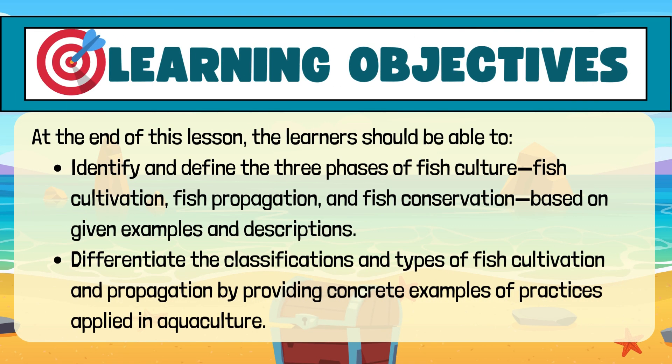Learning Objectives: At the end of this lesson, the learners should be able to identify and define the three phases of fish culture — fish cultivation, fish propagation, and fish conservation — based on given examples and descriptions. Differentiate the classifications and types of fish cultivation and propagation by providing concrete examples of practices applied in aquaculture.